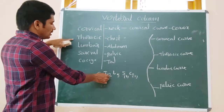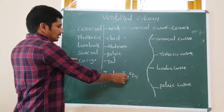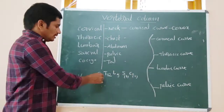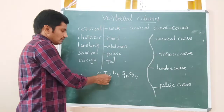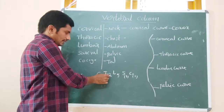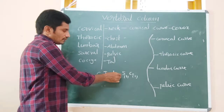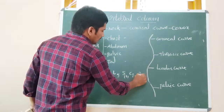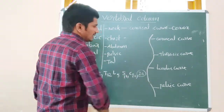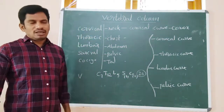Cervical, thoracic, lumbar, sacral, and coccyx. Seven plus twelve equals 19, plus 5 equals 24, plus 1 sacral equals 25, plus 1 coccyx equals 26 — a total of 26 vertebrae are present in the vertebral column of an adult.